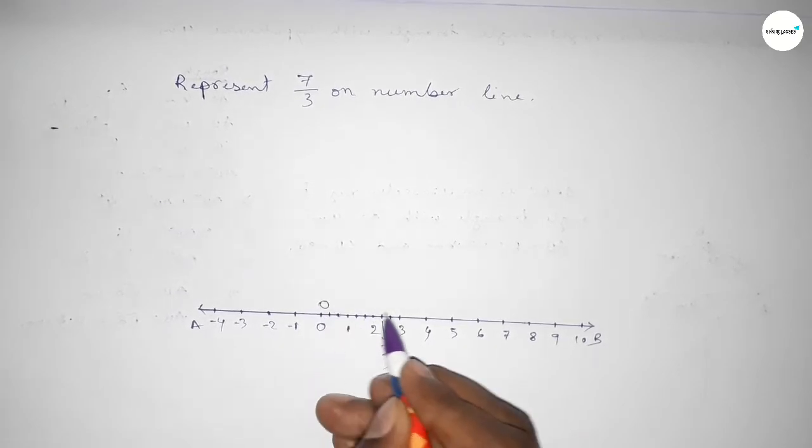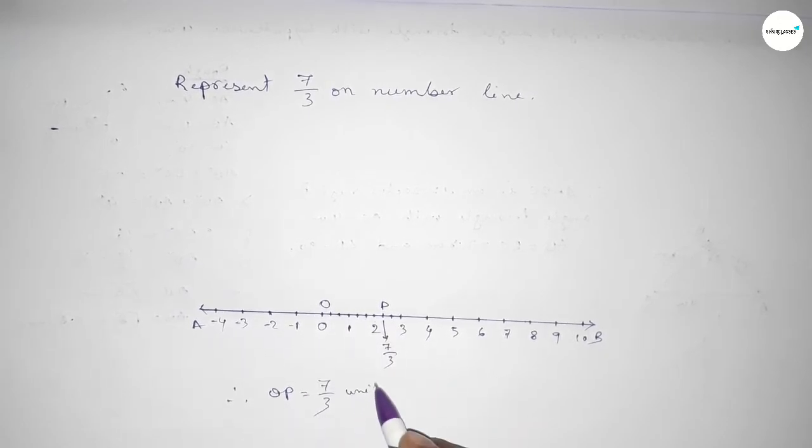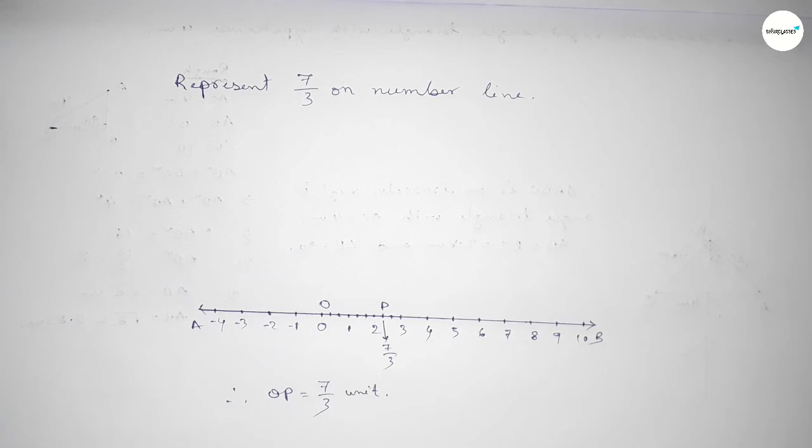So taking here point O and P, therefore O P equals 7 over 3 units. That's all, thanks for watching. Please share it with your friends.